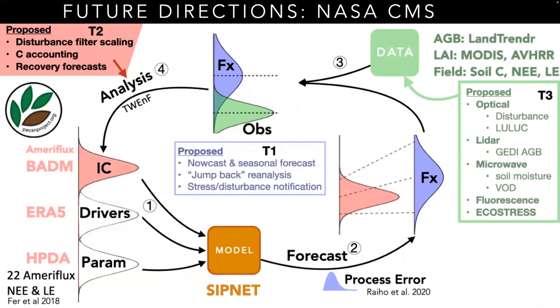Finally, task 3, shown in green, is to extend this assimilation to a wider range of data, bringing in LiDAR, microwave, thermal, and fluorescence remote sensing data as constraints. We are also using the same disturbance assimilation approach presented here in another project to develop forest pest forecasts for New England.